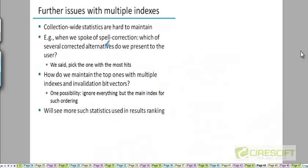Now, one of the things I want to mention, the last thing I want to mention for this chapter is that when you have multiple indexes, it's harder to maintain collection-wide statistics. For example, how do you maintain the collection frequency of a term when the postings list for that term are spread across multiple indexes?